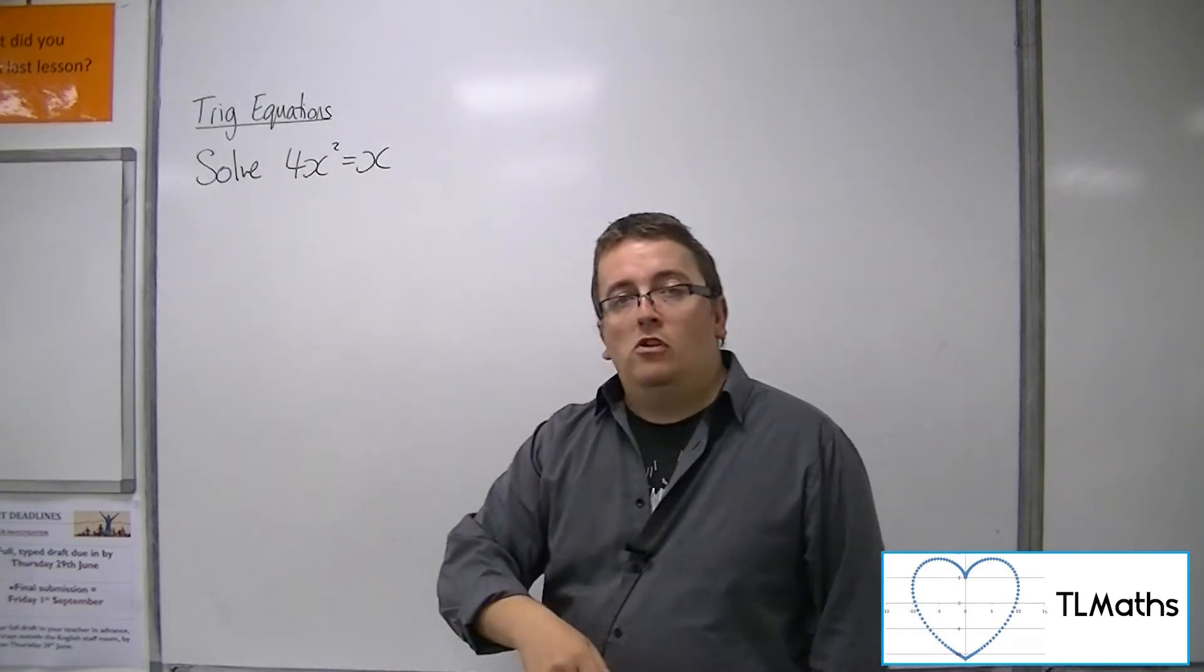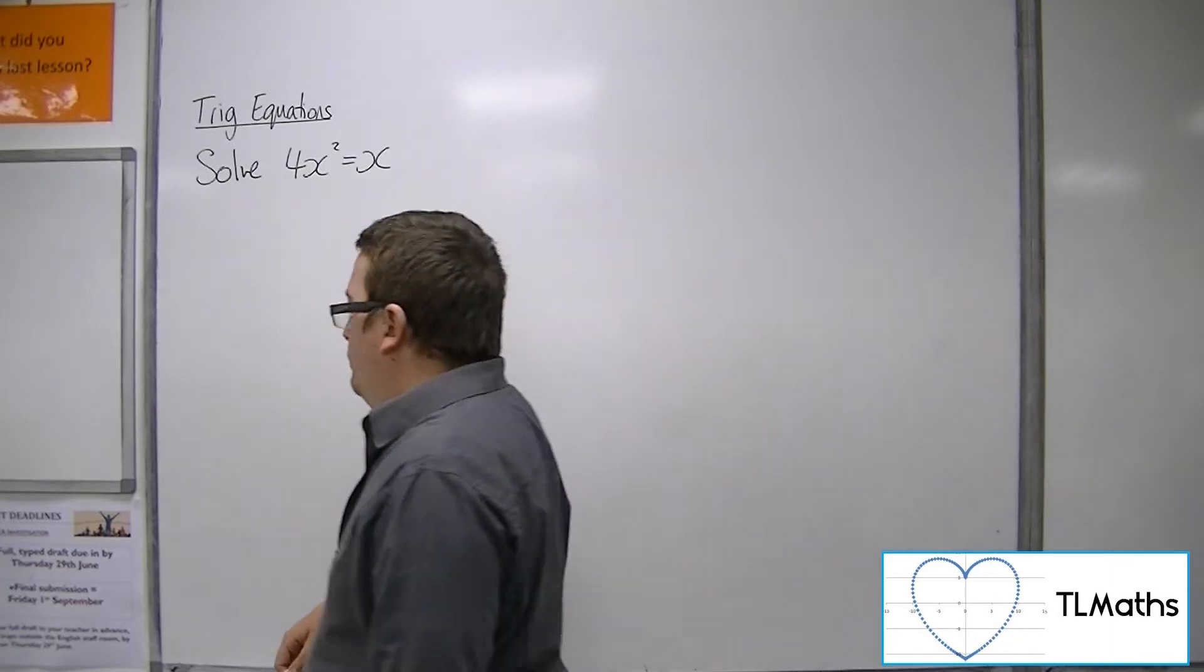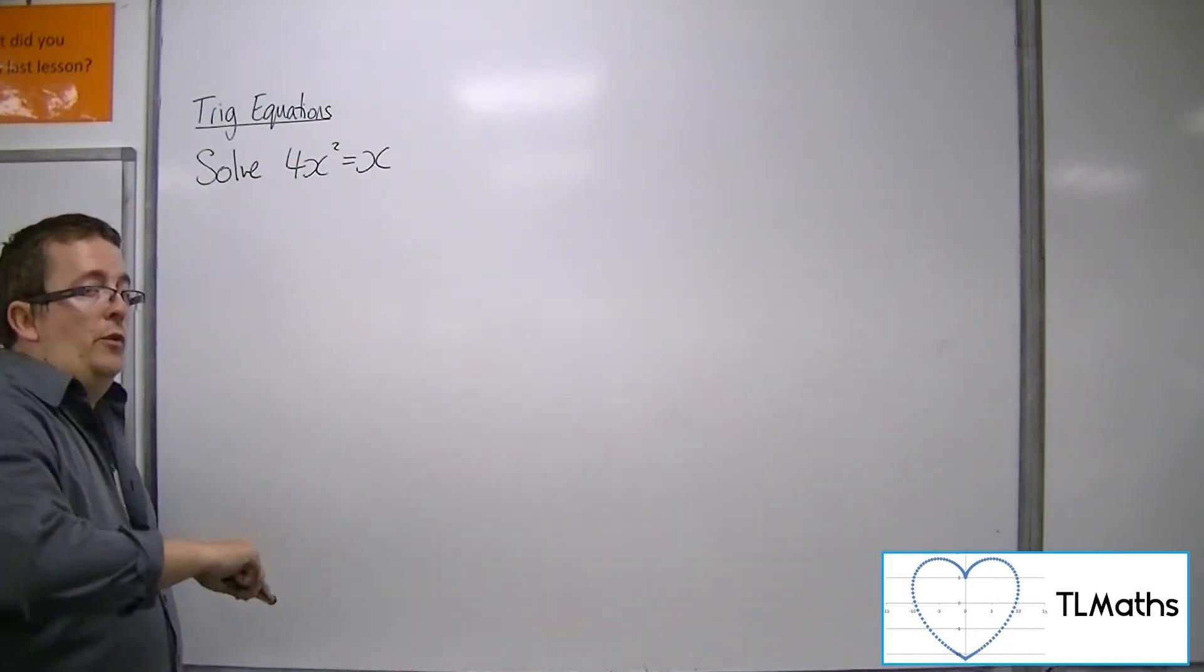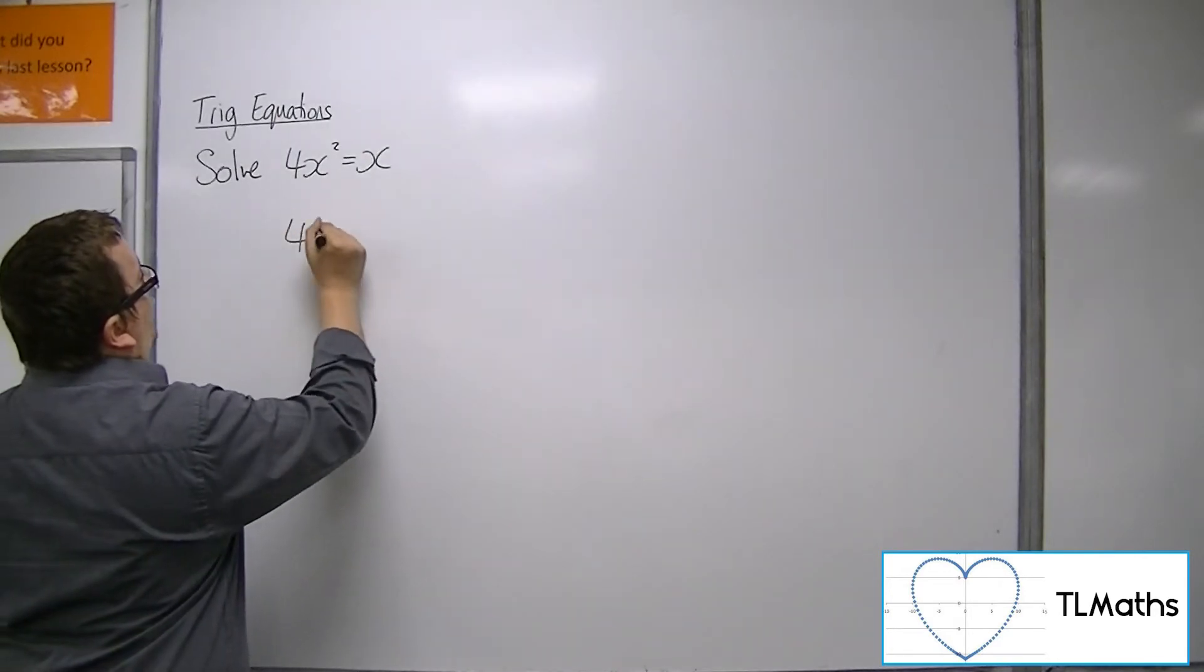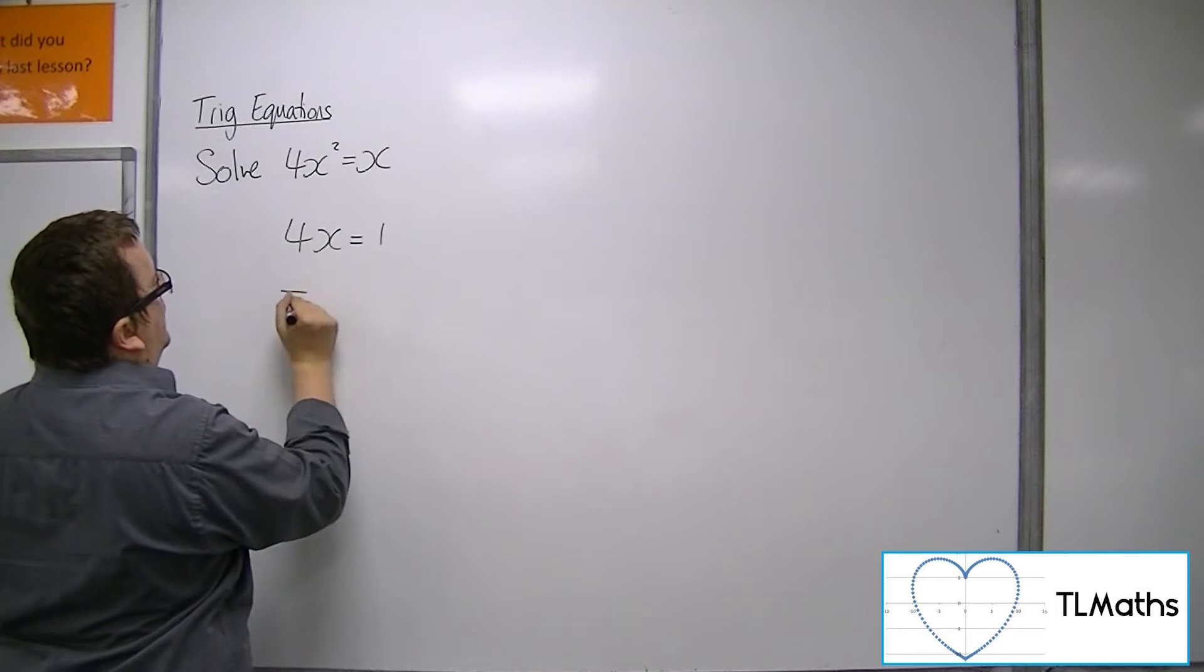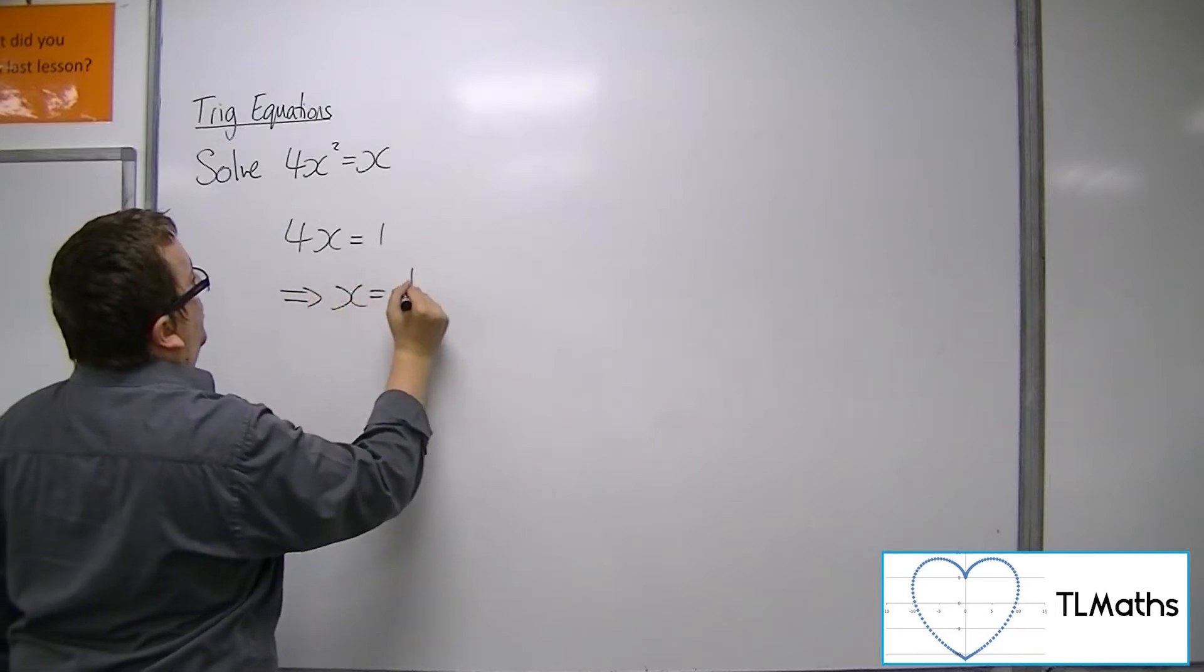A common error at this point is to divide both sides by x. And so if you did that, you would get 4x equals 1, and so x is equal to a quarter.